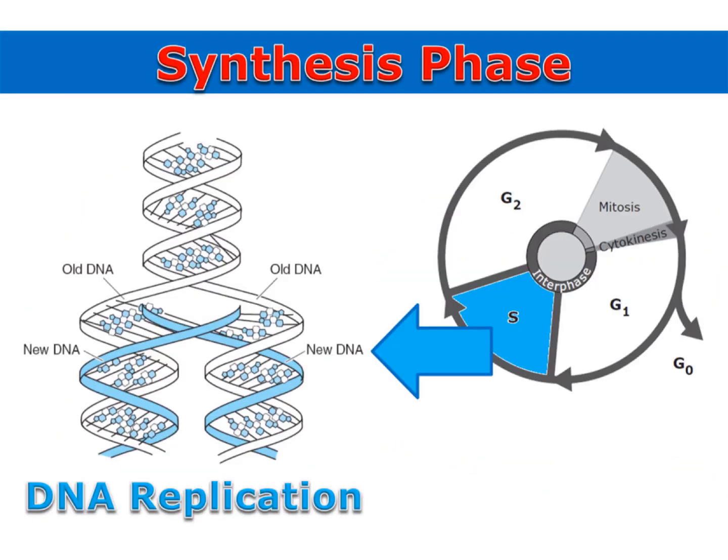Between the two gap phases is the S, or synthesis phase. It's during the synthesis phase that DNA replication occurs — the cell synthesizes new DNA. When the S phase is complete, the cell will contain two complete sets of its genetic material.